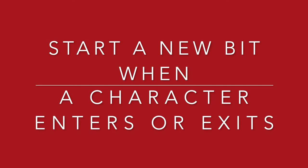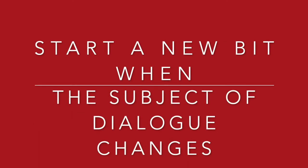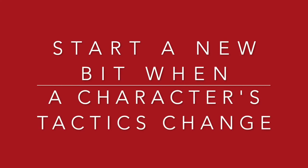The bits are also character-dependent — whichever perspective you're working from will change how the bits form. If you're working with a group of actors, you might decide some bits together as a group, but then each individual actor might want to reimagine the bits for themselves so it makes more sense from their character's point of view. Key elements that mark where a bit ends or begins include: when a character enters or exits the scene, when there is a change in the subject matter of the dialogue, and when there is a change in a character's tactics.